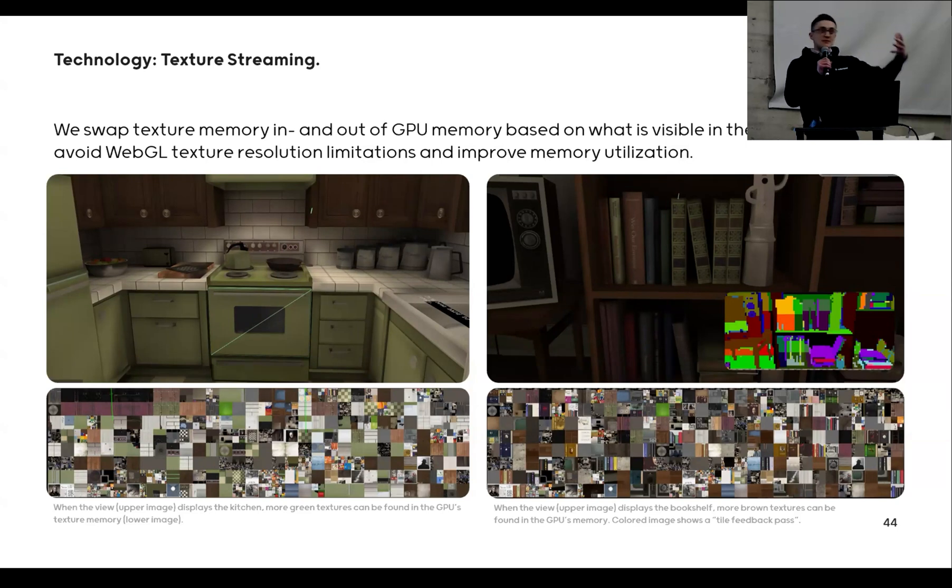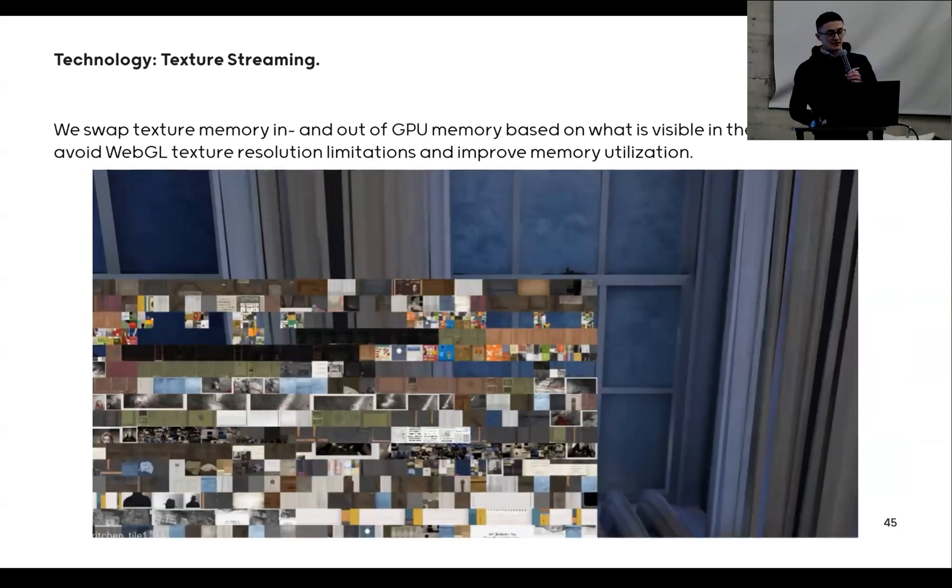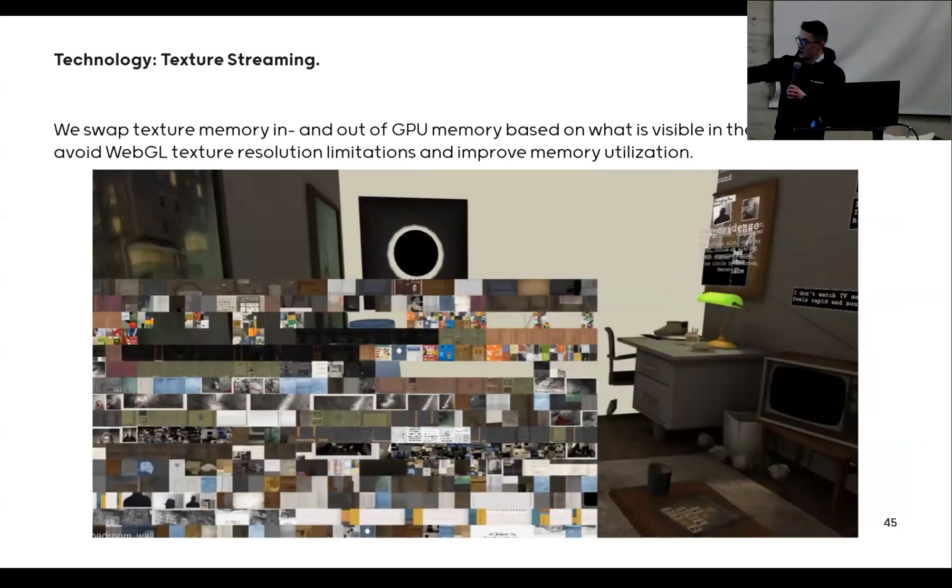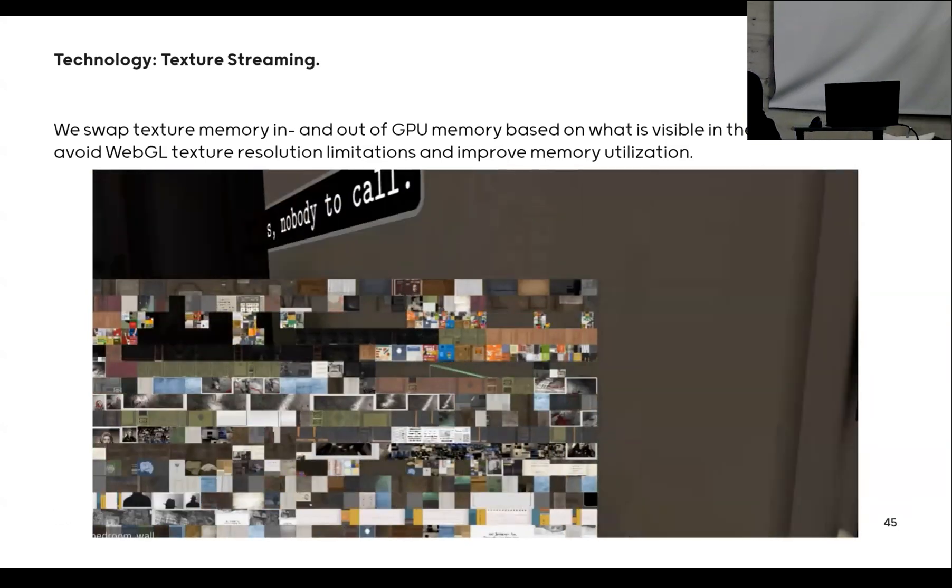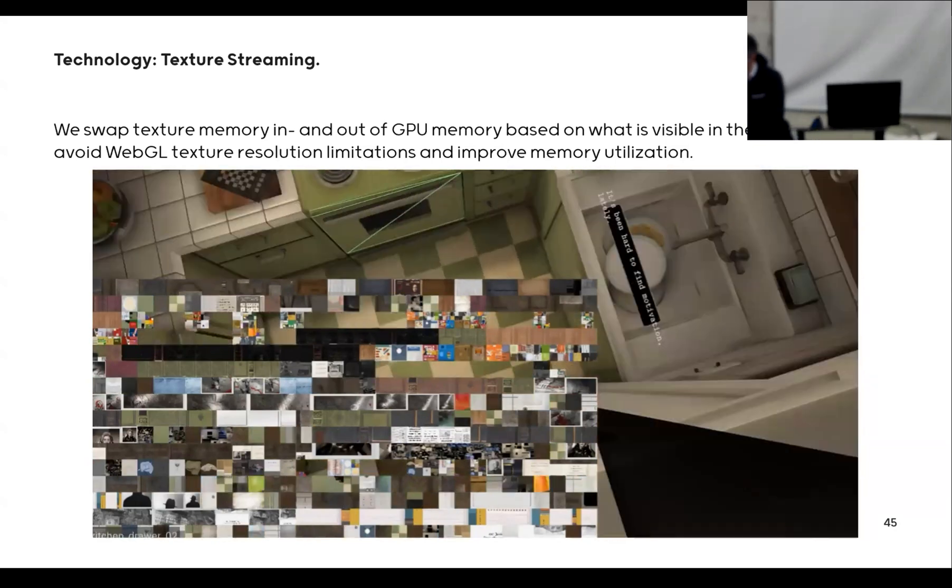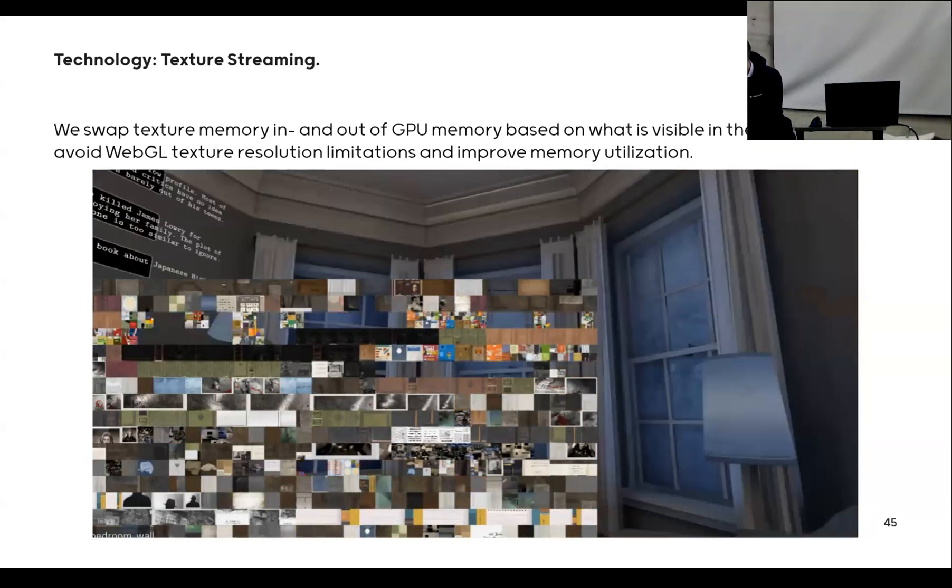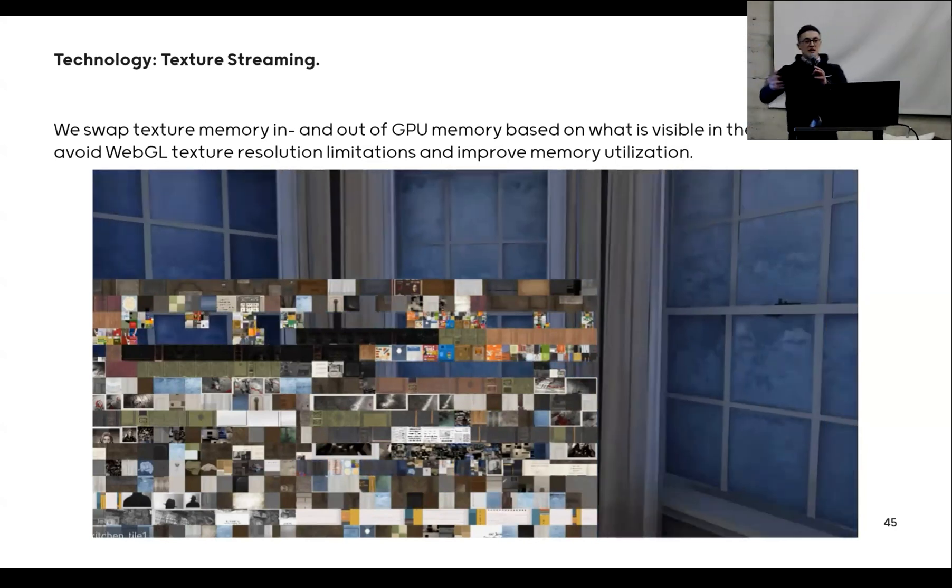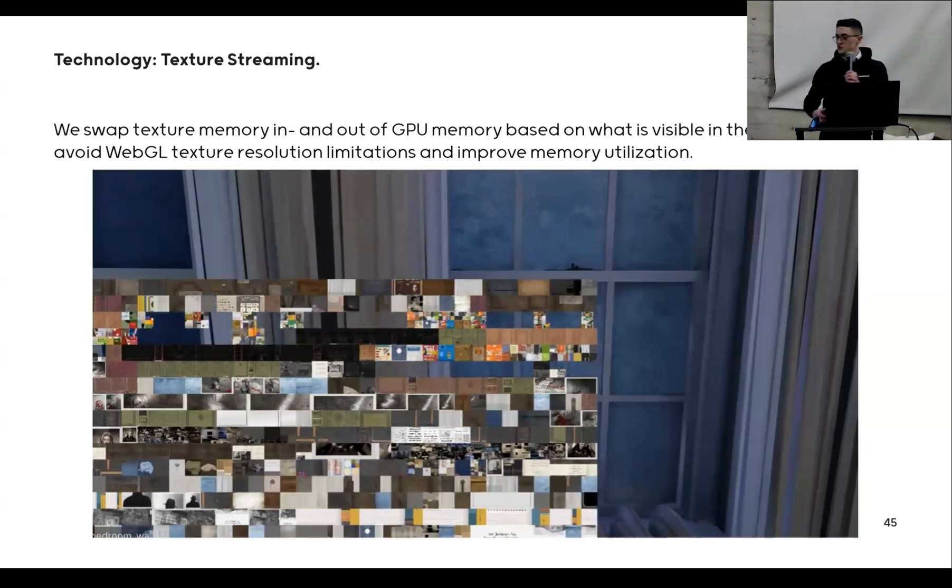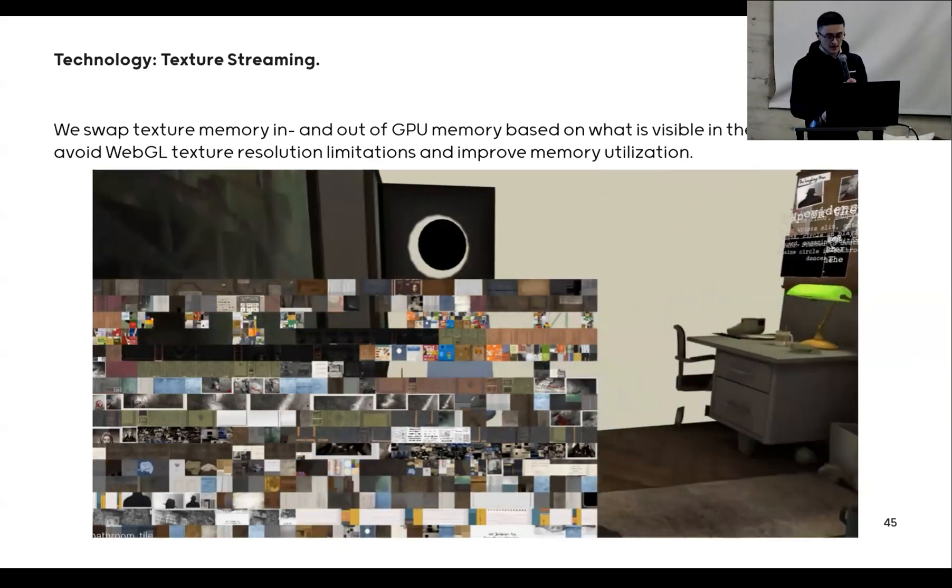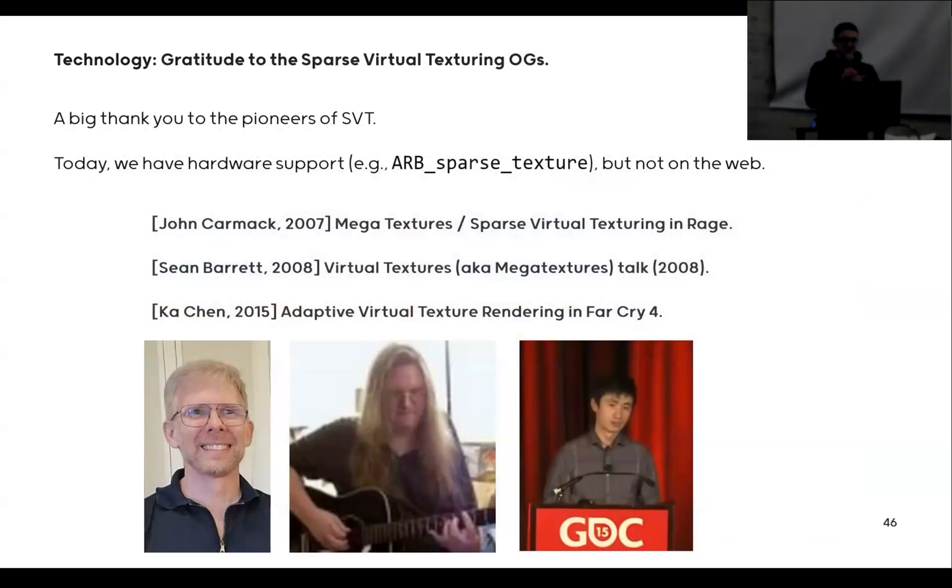We solve this by swapping in pieces of textures in and out of memory depending on what you currently render in the view. Now this is something we call texture streaming. And it kind of looks like this: if you have the frosted glass, you have pieces of glass textures in the GPU memory that's visualized down here, and then you have these tiles that swap in and out of the GPU memory based on what you see.